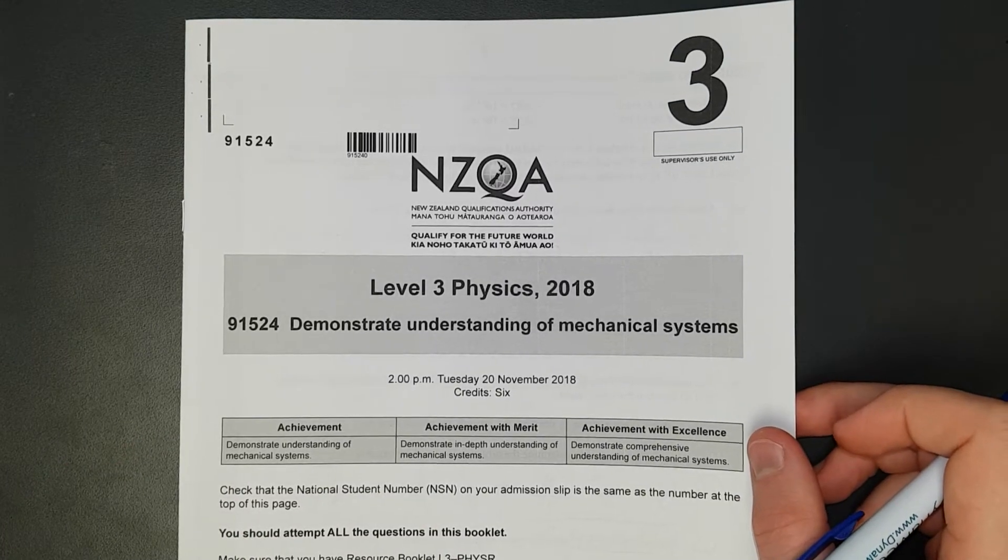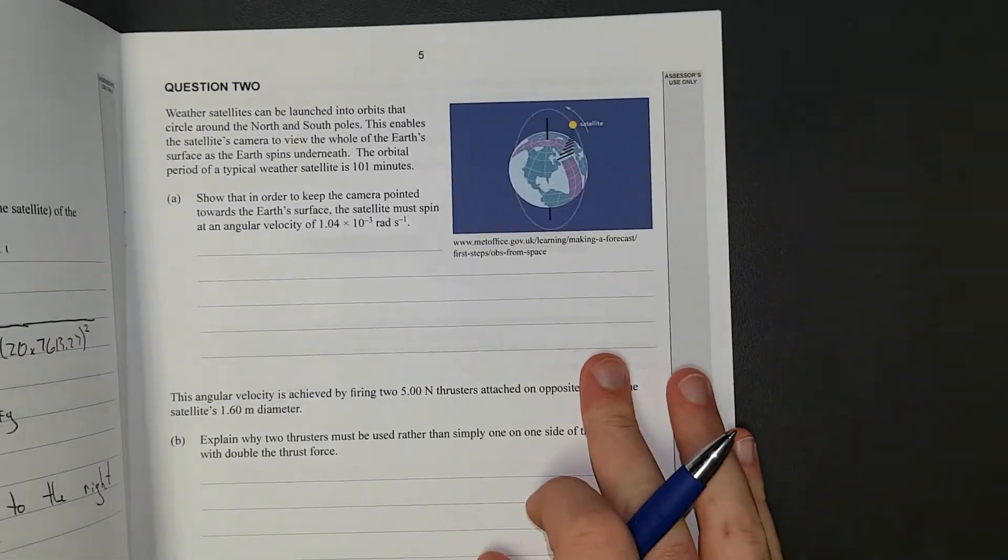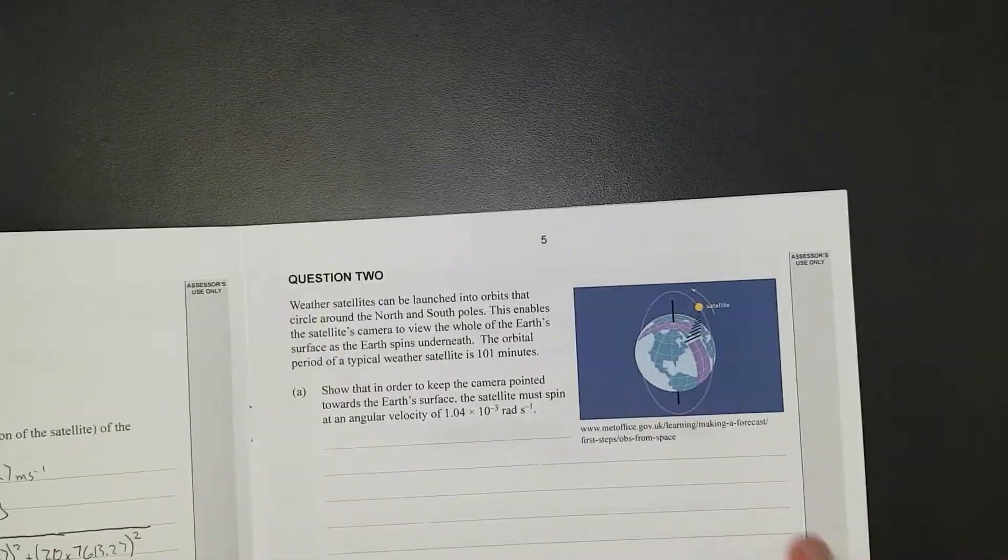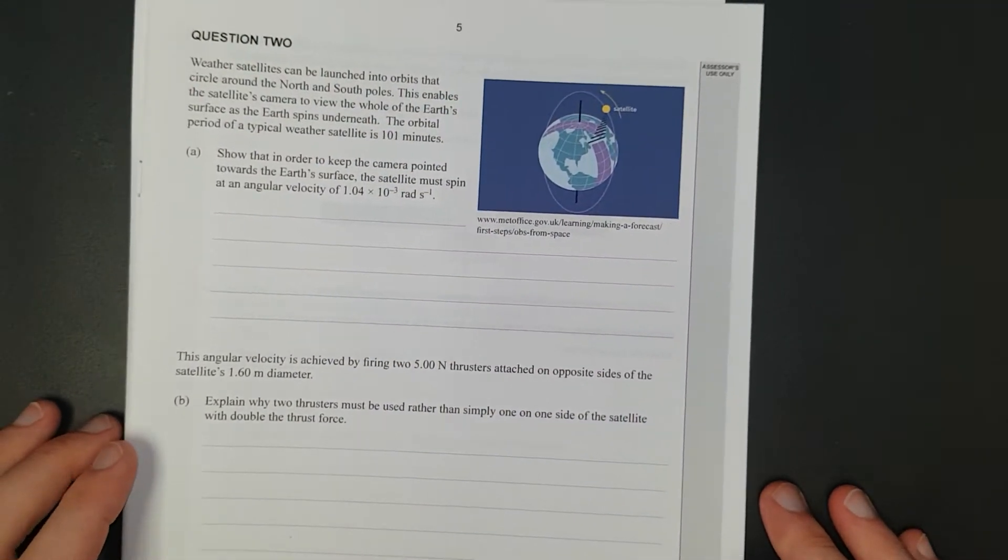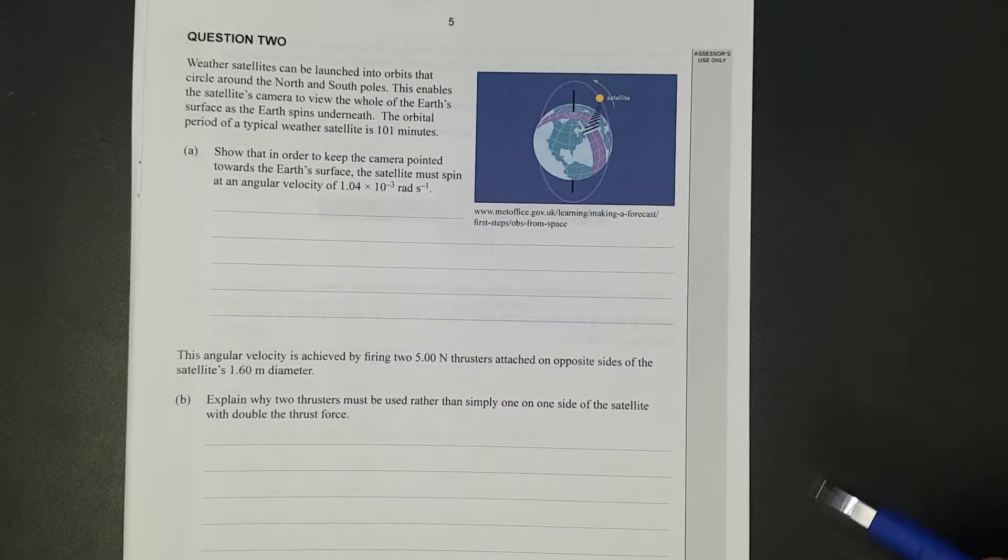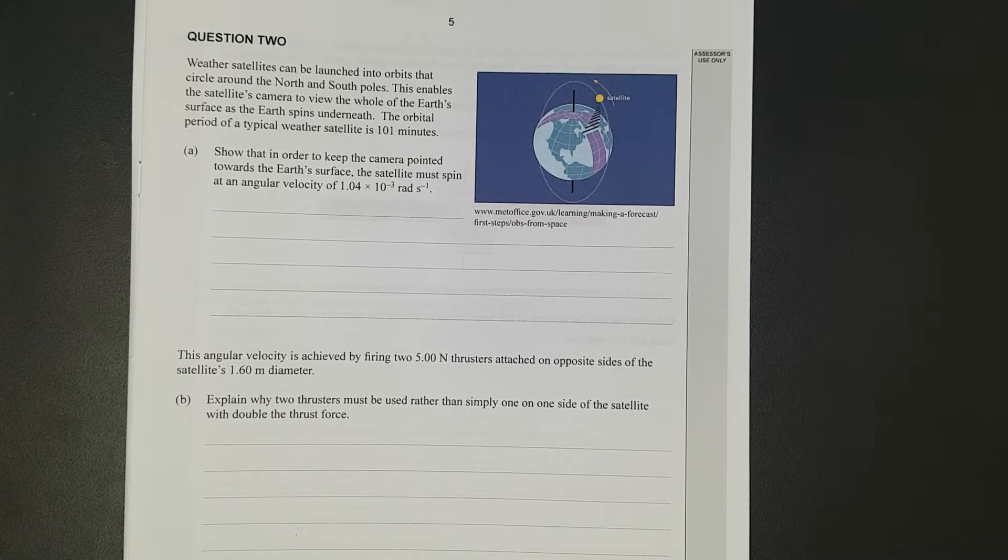For this video, I'll be working through question 2 of the 2018 Mechanics exam. Question 2: Weather satellites can be launched into orbits that circle around the north and south poles. This enables the satellite camera to view the whole Earth's surface as the Earth spins underneath. The orbit period of a typical weather satellite is 101 minutes.